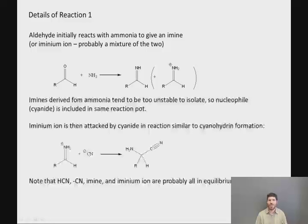The ammonium chloride that I talked about in the previous reaction is simply the conjugate acid of ammonia. And as long as you have some of that present, the reaction will take place at the proper pH to favor imine formation. Now, imines derived from ammonia tend to be too unstable to isolate. So we need to include the nucleophile that's going to come in and attack the imine, namely cyanide, in the same reaction pot.